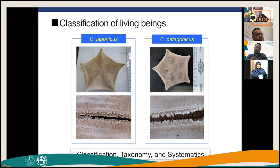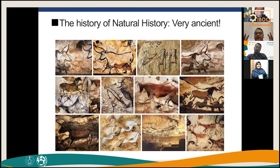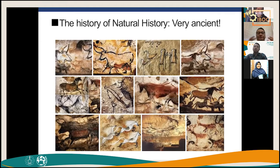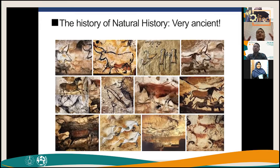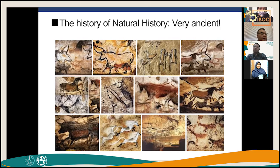Natural history studies usually entail classification, taxonomy, and systematics. However, the study of natural history has been very ancient — the interest of classifying organisms has been around even in animals. All animals try to classify whether certain organisms are edible or not, poisonous or not, dangerous or not, predator or prey, or food.